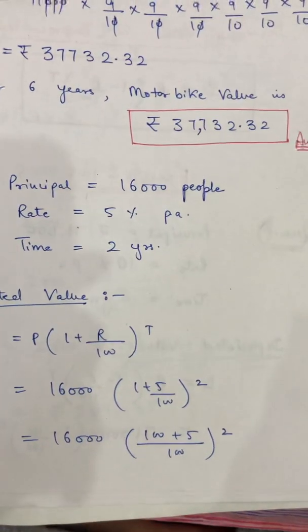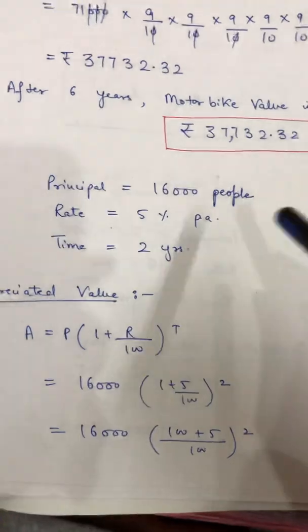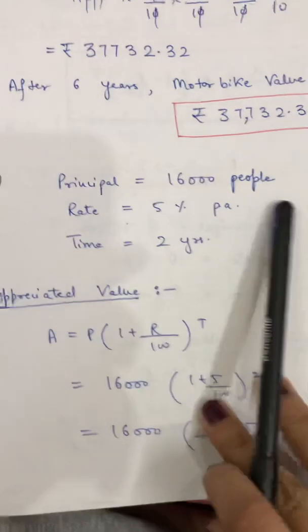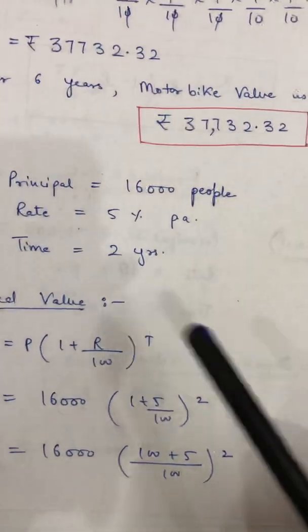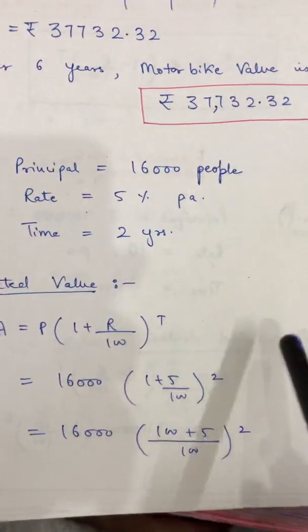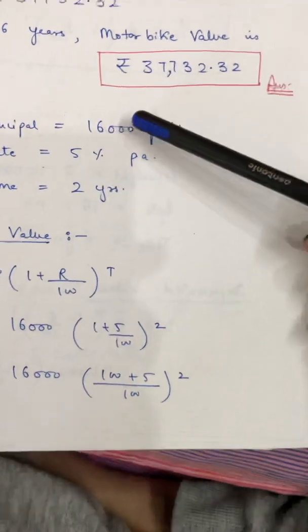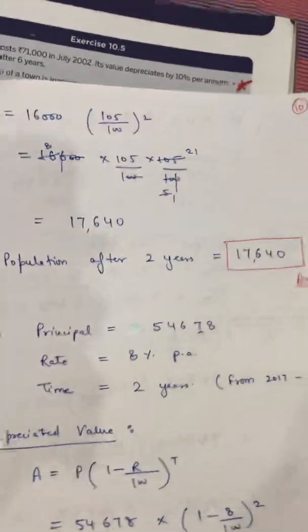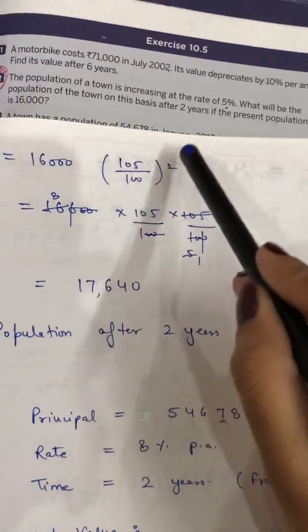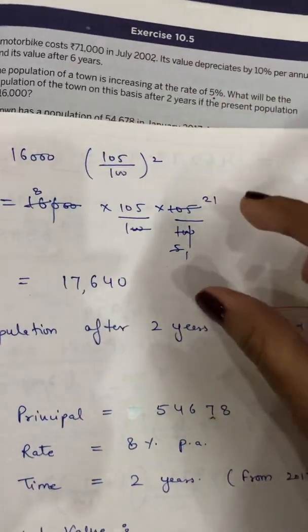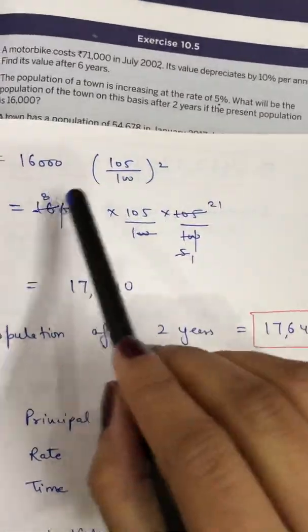Rate = 5% per annum, Time = 2 years. For the appreciated value formula, use a plus sign; for depreciated, use minus. Place all values of principal, rate, and time into the formula. Take the LCM, then open the bracket raised to the power, and cancel whichever terms you can.